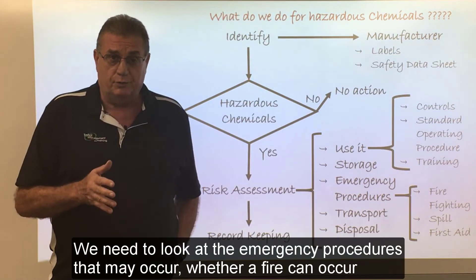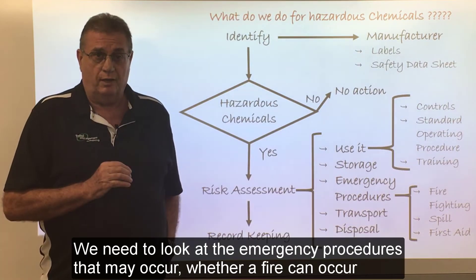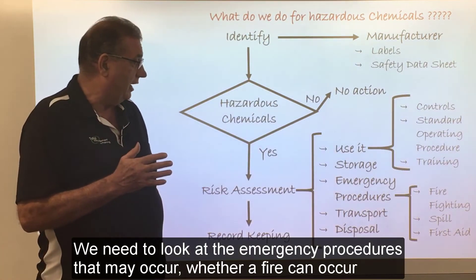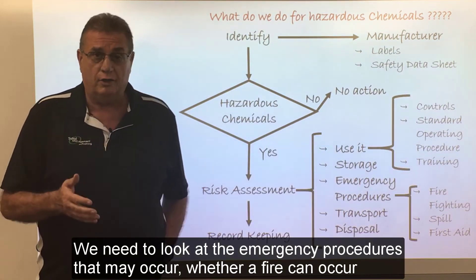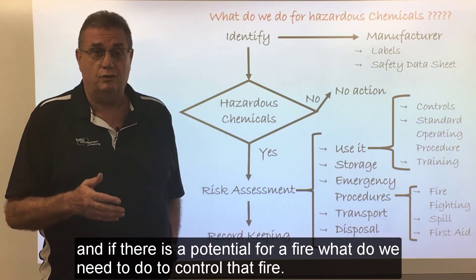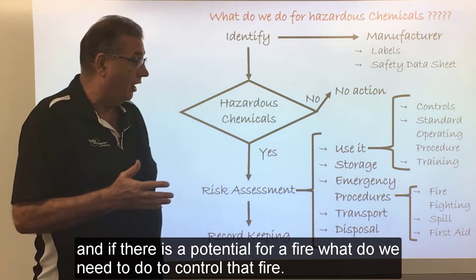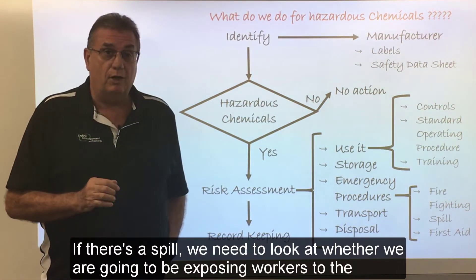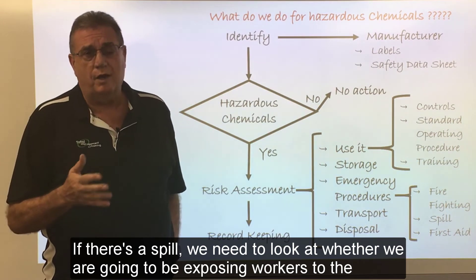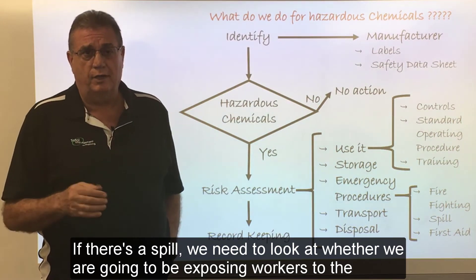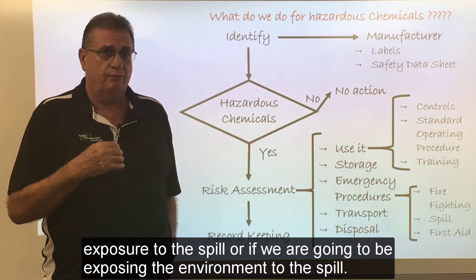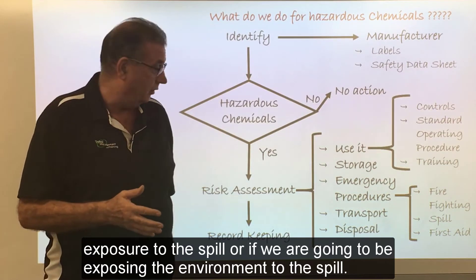We need to look at the emergency procedures that may occur. We need to look at whether a fire can occur, and if there is a potential for a fire, what we need to do to control it. If there's a spill, we need to look at whether we're going to be exposing workers to the spill or exposing the environment to the spill.